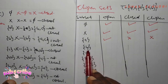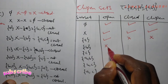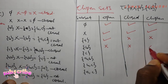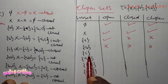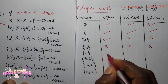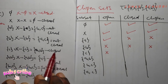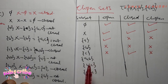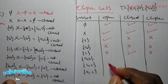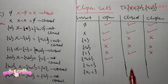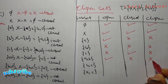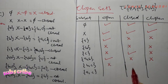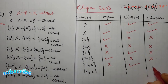The next subset is B. Is B open? There is no B in tau, so B is not open. Is B closed? B is not closed. Since B is neither open nor closed, B is not clopen. The next subset is C. Is C open? C is not in tau, so C is not open. Is C closed? C is closed. Since C is closed but not open, C is not clopen. We check AB. Is AB open? AB is in tau, so AB is open. Is AB closed? AB is not closed. Since AB is open but not closed, AB is not clopen. We check BC. Is BC open? BC is not in tau, so BC is not open. Is BC closed? BC is closed. Since BC is closed but not open, BC is not clopen.